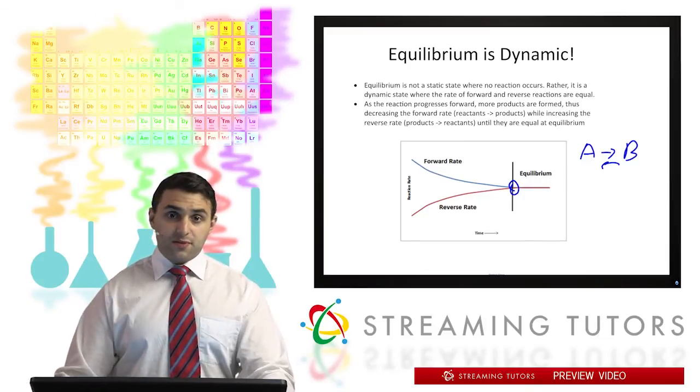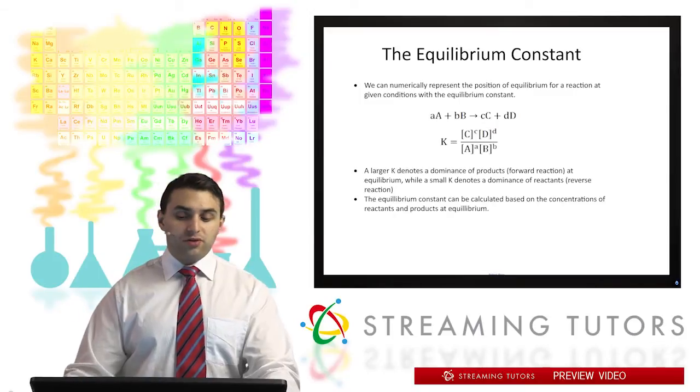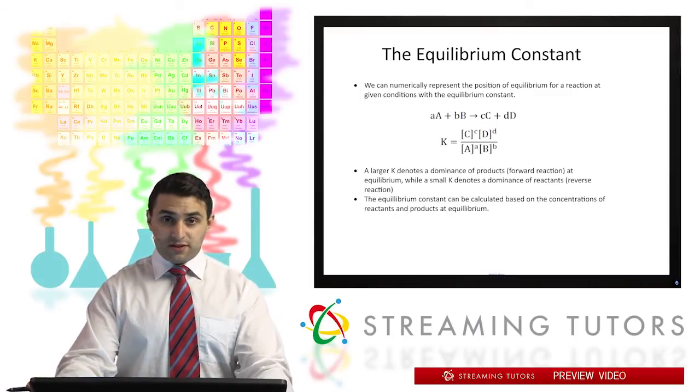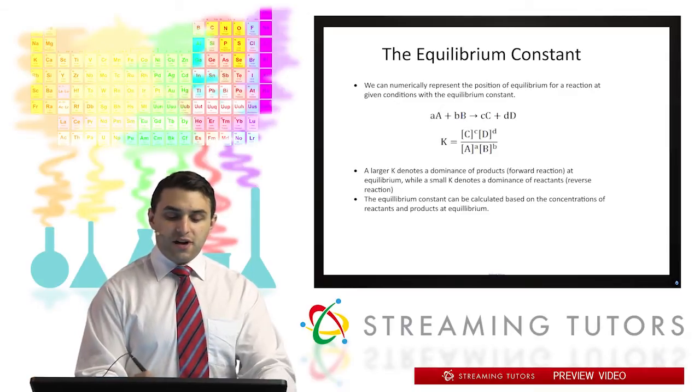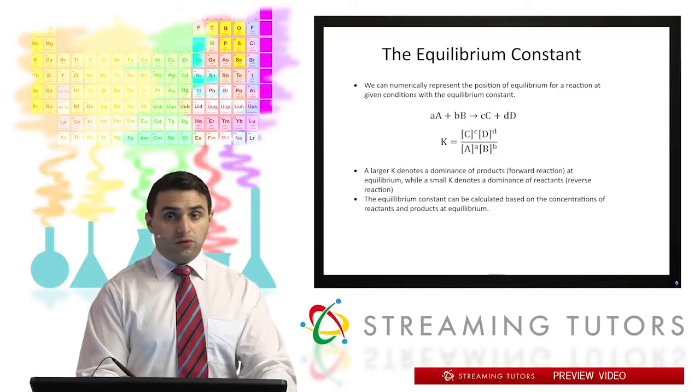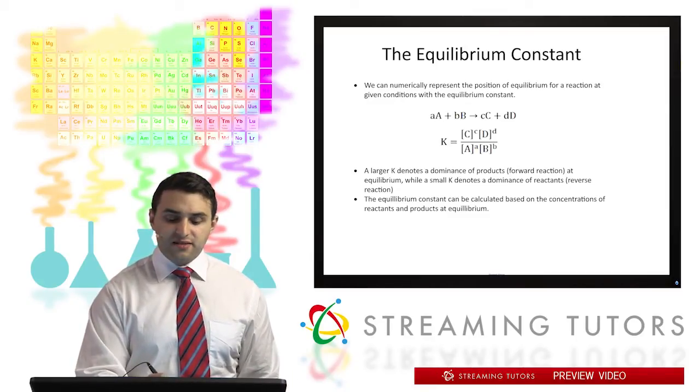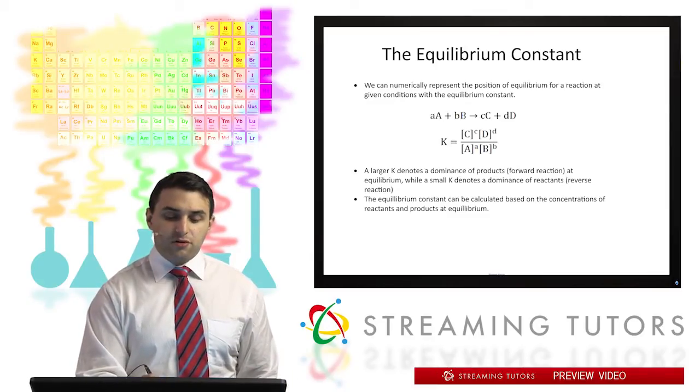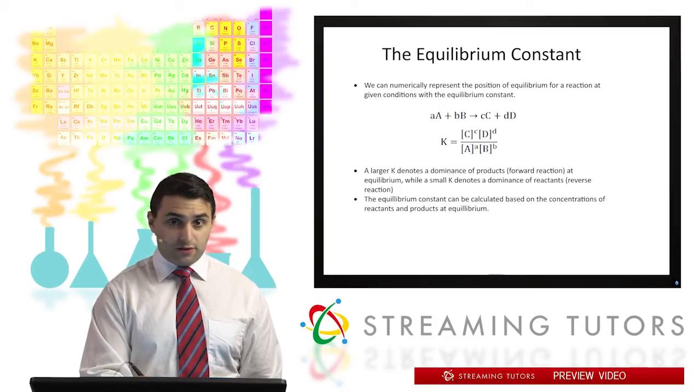So what's going to be useful for us is we're going to need to be able to quantify exactly where an equilibrium position is, and we do that through something known as the equilibrium constant. Let's say we have this reaction A plus B equals to C plus D, with their lowercase coefficients. We can define the equilibrium constant as the products to their coefficients powers over the reactants to their coefficient powers.